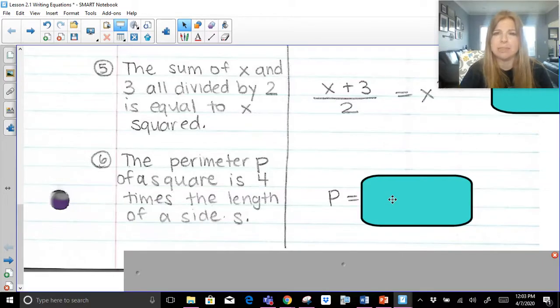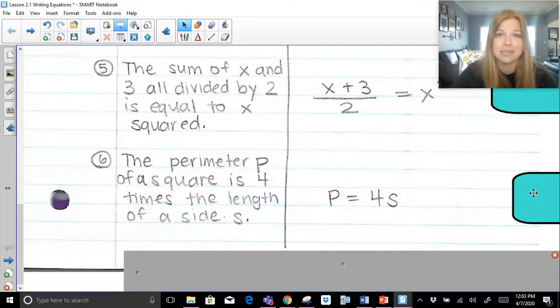We know times, we are past using the multiplication x or even the raised dot. We don't even need parentheses. If I want to do 4 times s, we know that side by side means multiply. So it's just p equals 4s. It's a very tiny equation. And that's it.